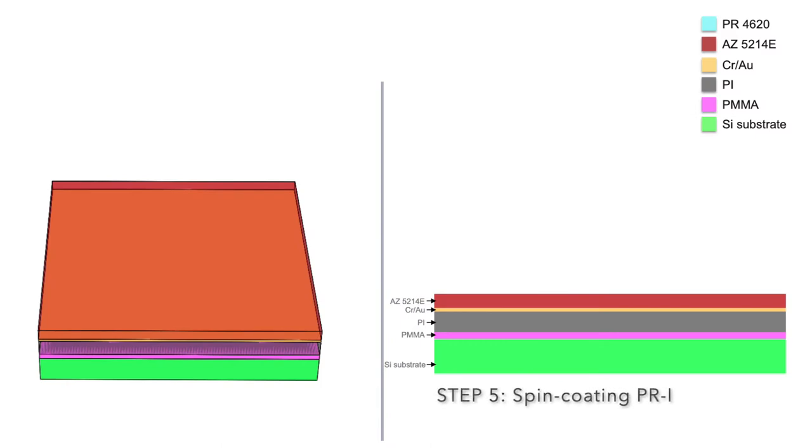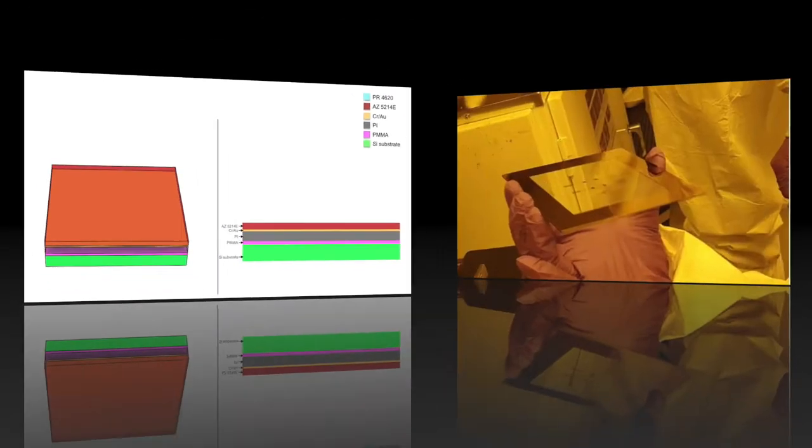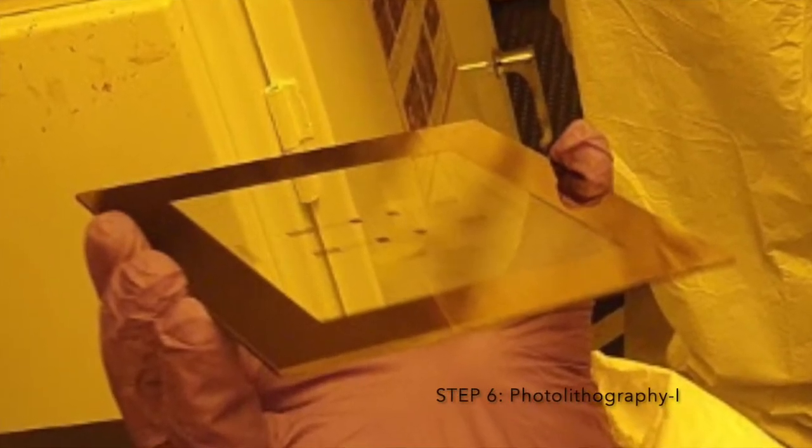Let's define the pattern of our sensor onto the substrate. To do this, we first apply a positive photoresist polymer layer followed by a soft bake. Then, we perform photolithography. First, we prepare a CAD design for our sensor geometry and transfer it onto a chromium glass mask.